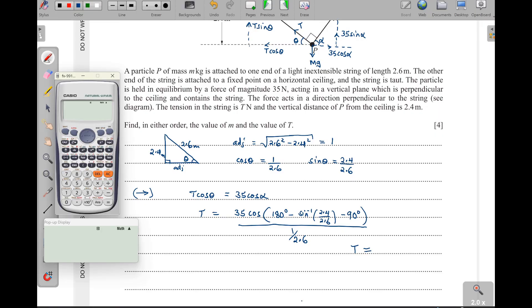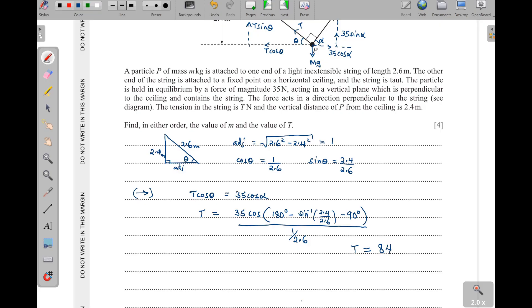Our T to three significant figures will be what? So when I come here, since 2.6 somersaults, I will just say 2.6 times 35, then cosine of 180 minus 90. I will take 90, then I say 90 minus the arc sine of 2.4 out of 2.6. So we get 84, it is exact. So it is 84 newtons, as simple as that.